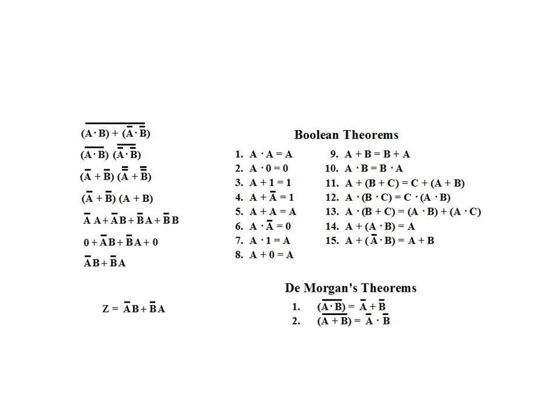Output Z is equal to NOT A and B, OR NOT B and A. As a side note, this final output expression is the equivalent of a single exclusive OR gate.